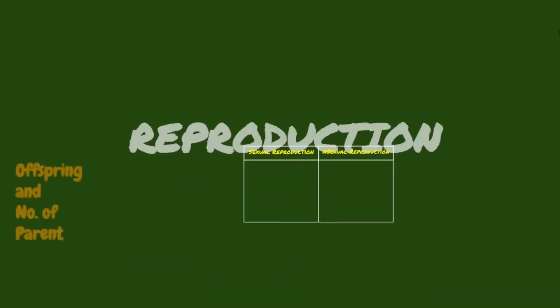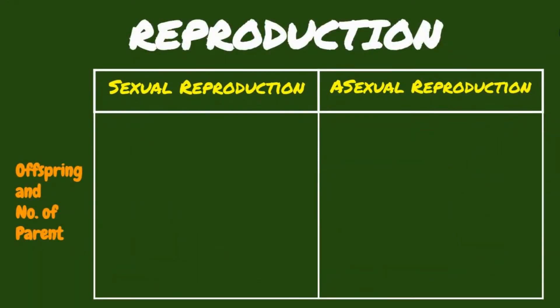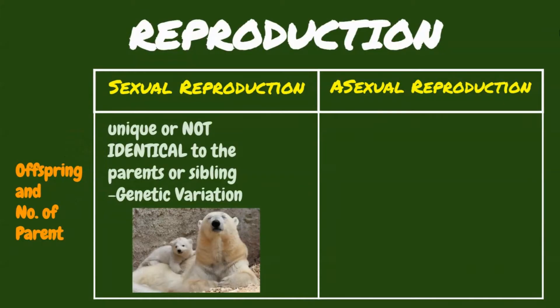Sexual reproduction occurs when a new individual is formed by the union of two sex cells, or gametes. Hence, the offspring is unique and not identical to the parents or siblings, since it will be a combination of two sets of characteristics. This leads to genetic variation of the offspring.